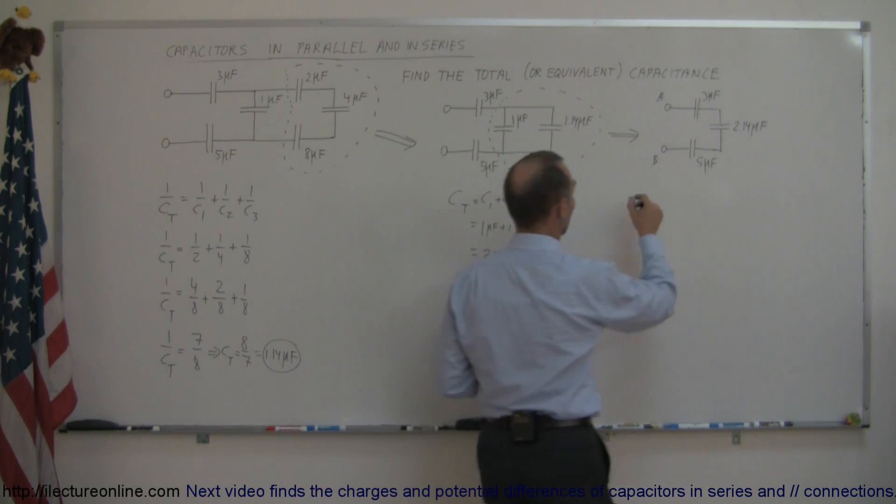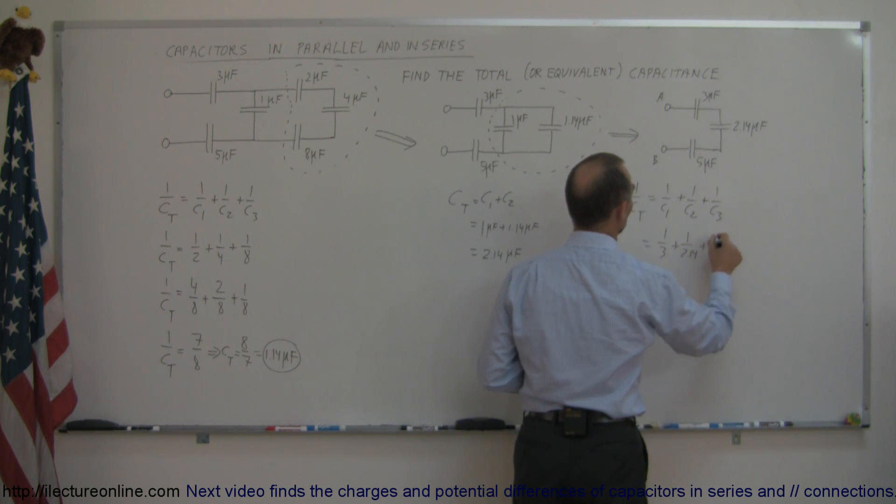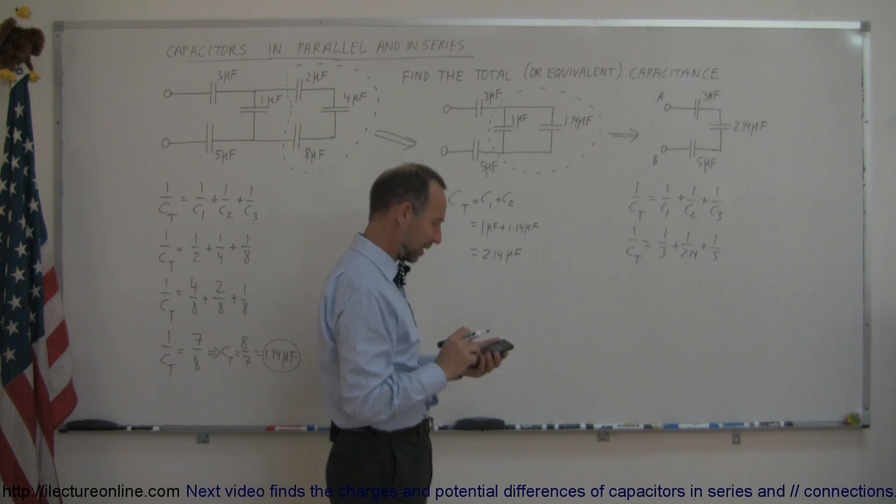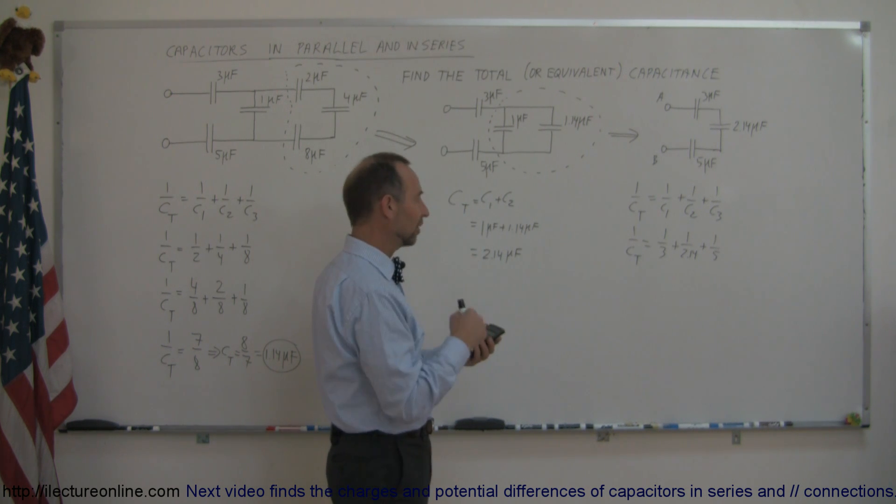If they're connected in series, we use this equation again to find the equivalent capacitance. One over C total equals one over C1 plus one over C2 plus one over C3, which means one over three plus one over 2.14 plus one over five. I recommend you grab a calculator.